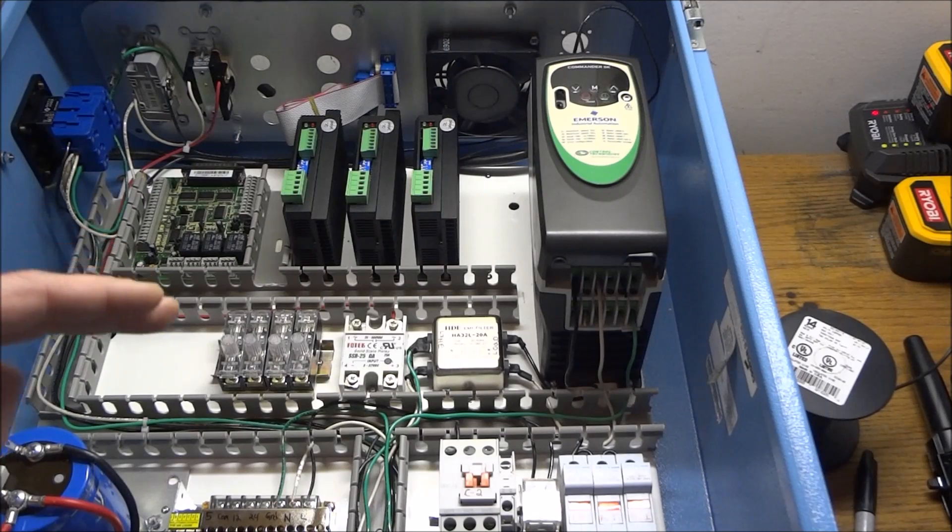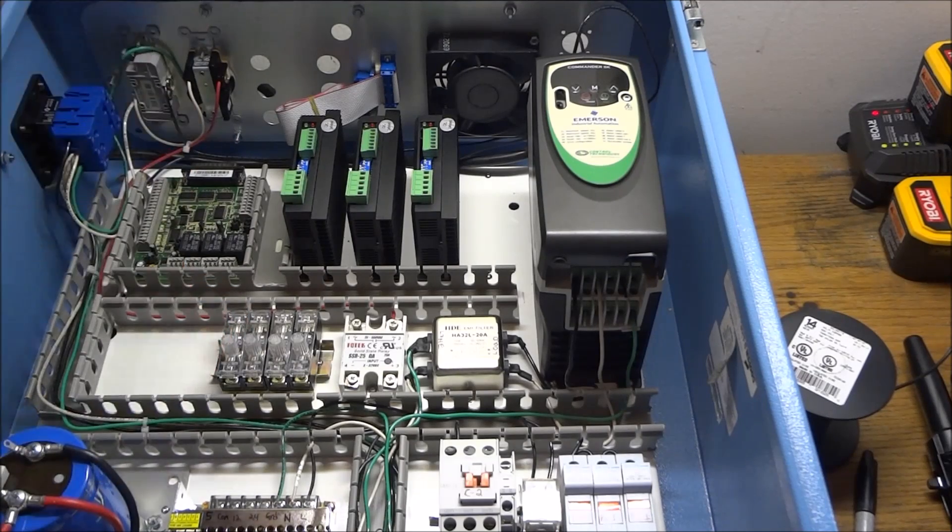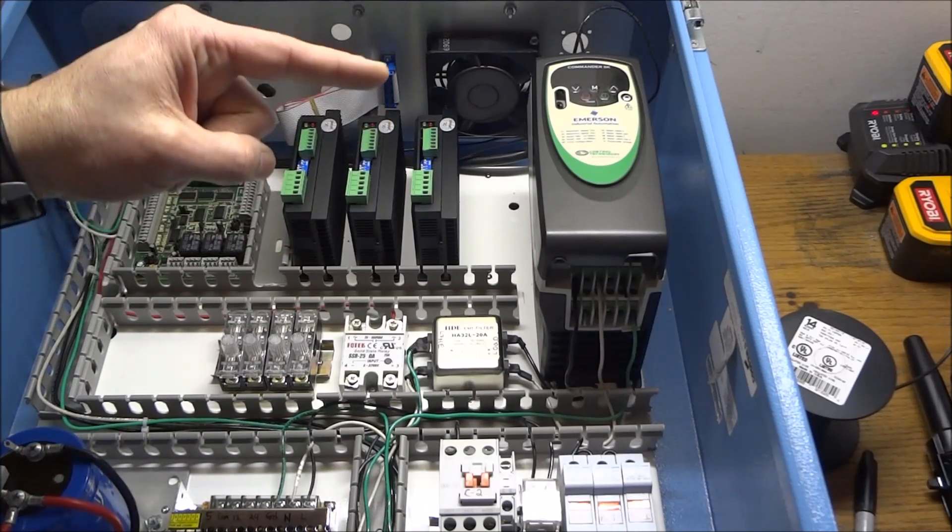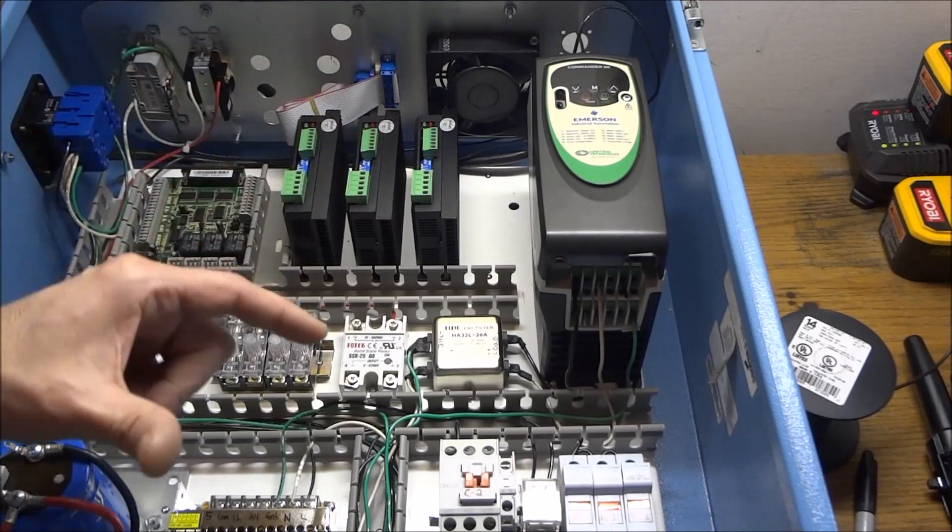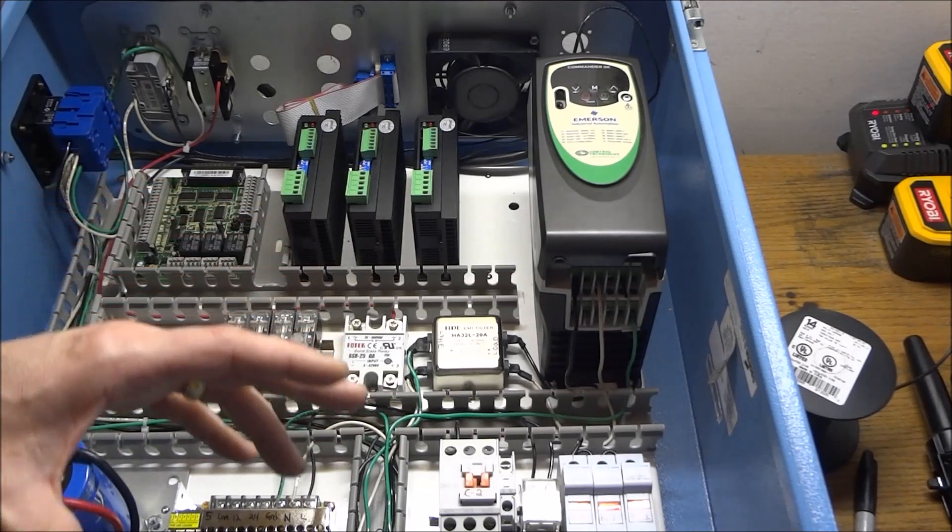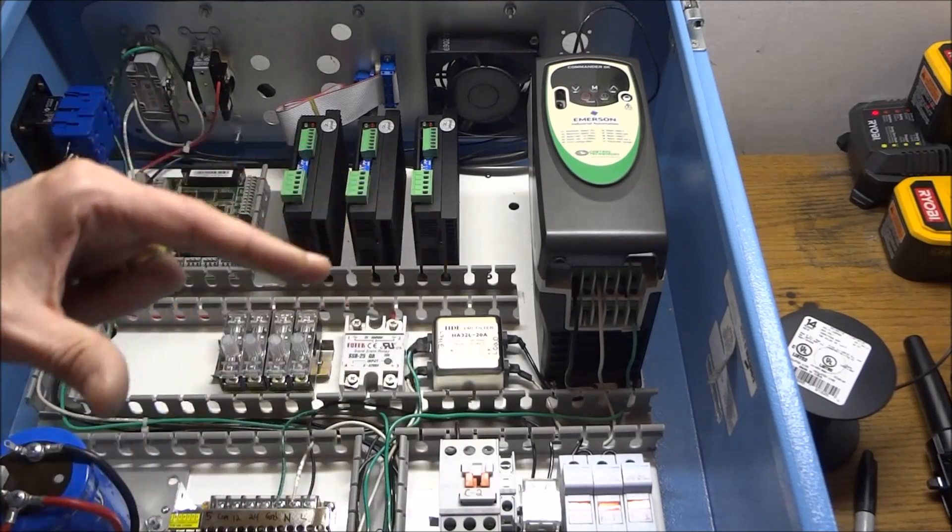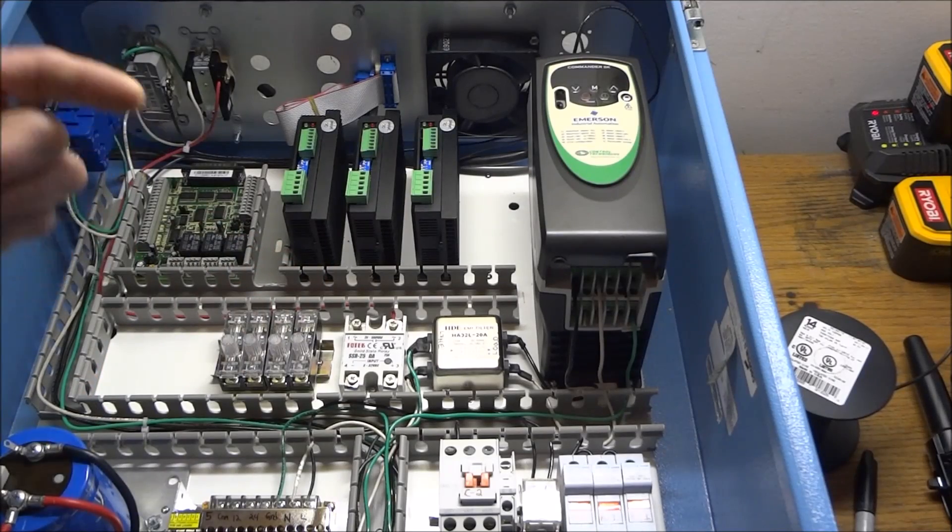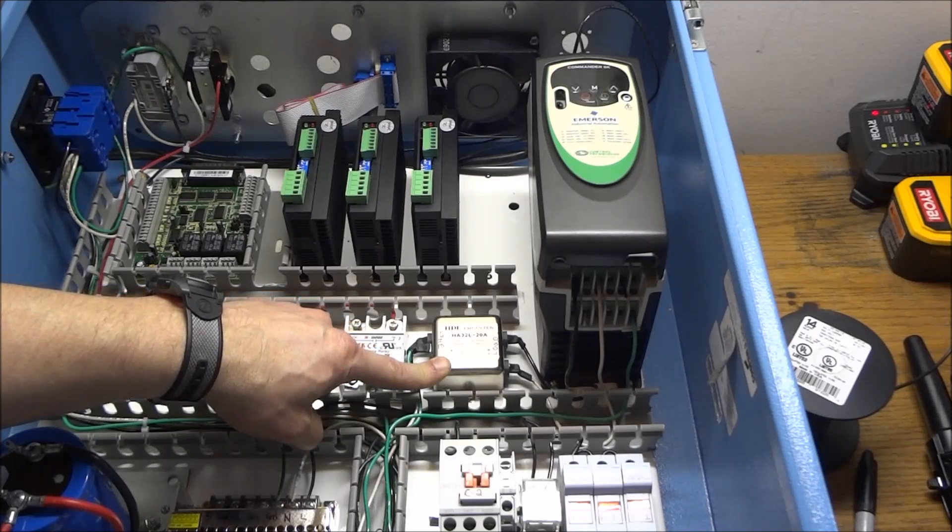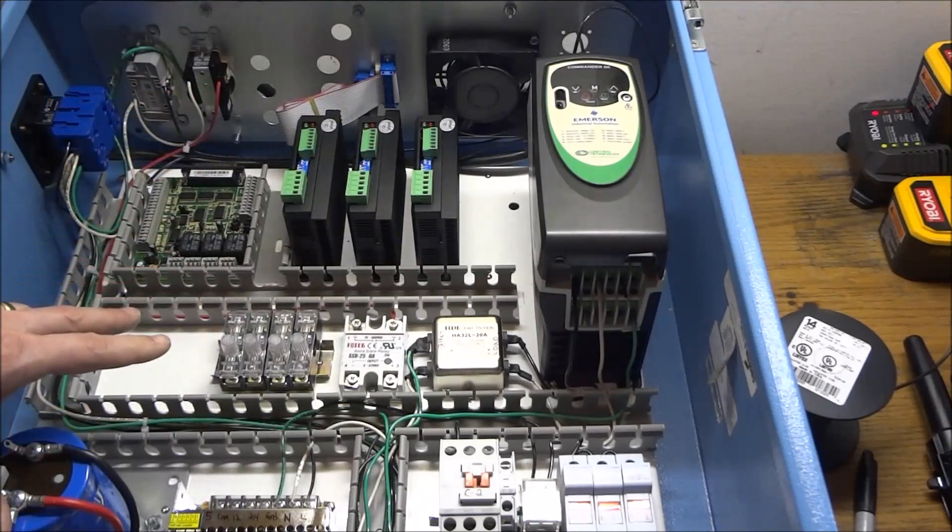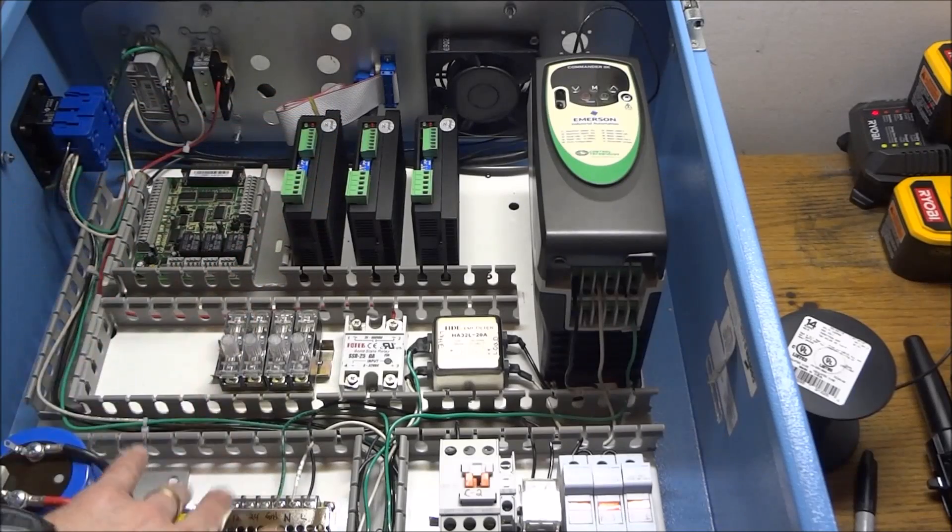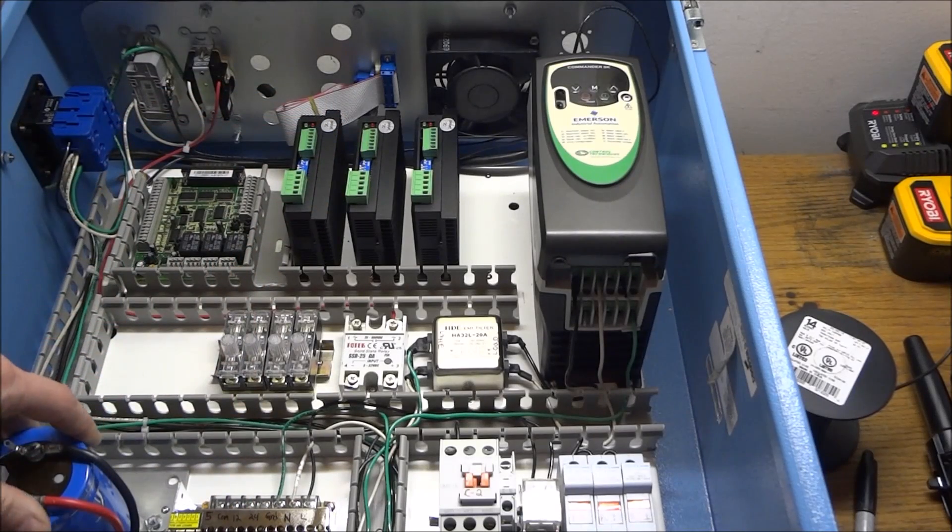Now what the filter does is it filters out the incoming power. And then when the VFD generates the EMI and it tries to come back to the source which is the VFD, the EMI filter prevents this noise from getting back into your system and getting back into your power supplies and your electronics.